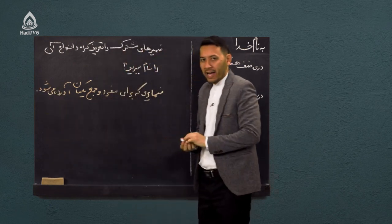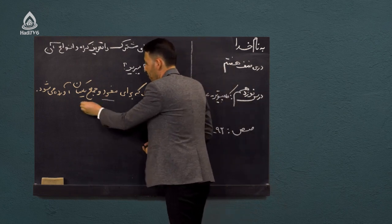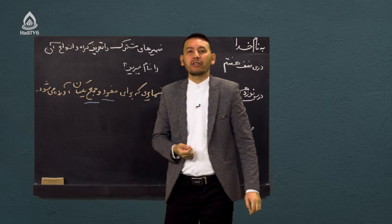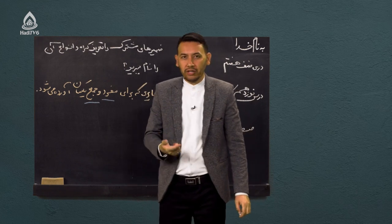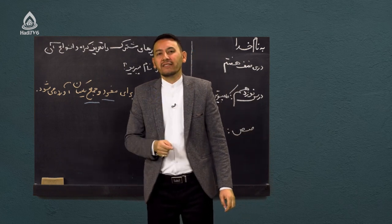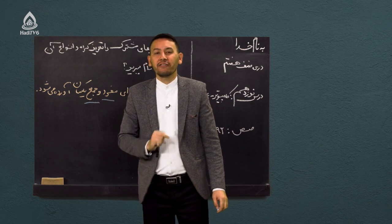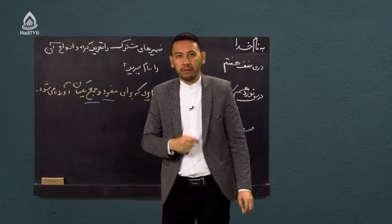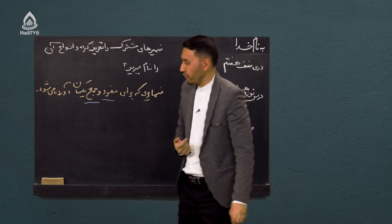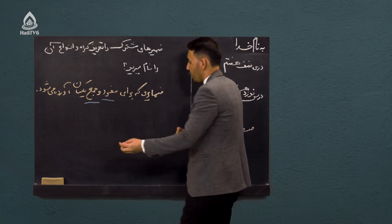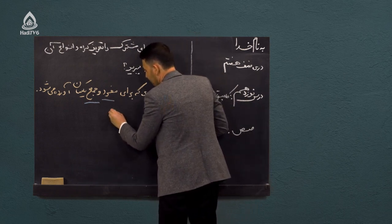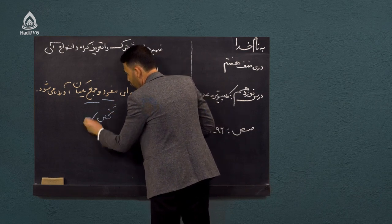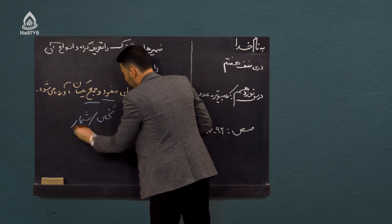یک تعریف دقیق‌تر در حوزه ضمیر مشترک این است که بگوییم ضمایری هستند که برای شخص و برای شمار در حوزه تصریف فعل به طور یکسان به کار گرفته میشود. از نظر چی؟ از نظر شخص و از نظر شمار - دو قسم.